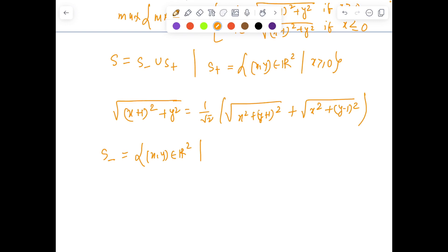And S⁻ is a set of all points in the plane so that x ≤ 0, which gives you √((x-1)² + y²) equals (1/√2) times √(x² + (y-1)²) + √(x² + (y+1)²).